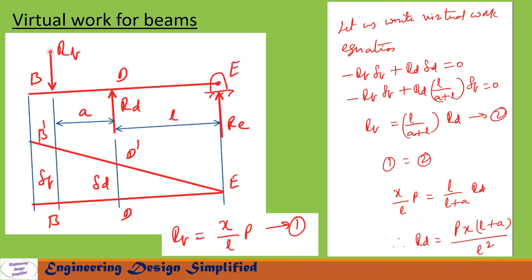Now let us write the virtual work equation for beam BDE: −Rb · delta_B + Rd · delta_D = 0. The minus sign is because Rb acts vertically downwards while delta_B is upward; the plus sign is because Rd and delta_D are both upward. Substituting delta_D = L / (A + L) · delta_B, we get Rb = L / (A + L) · Rd — call this Equation 2. Equating Equation 1 and Equation 2 and simplifying, the reaction at D is Rd = P · x · (L + A) / L².